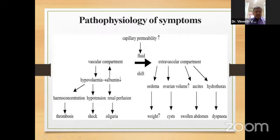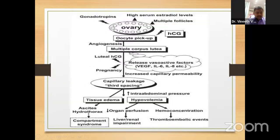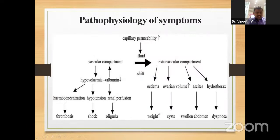In the extravascular compartment, this fluid shift causes edema, increased ovarian volume, ascites, hydrothorax, increased weight gain, and distended abdomen with dyspnea. In the vascular compartment, it leads to hypoalbuminemia, resulting in thrombosis, shock, and finally oliguria. The main mechanism here is capillary leakage — that is, third spacing.